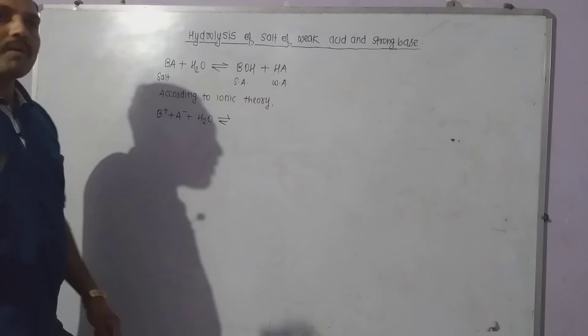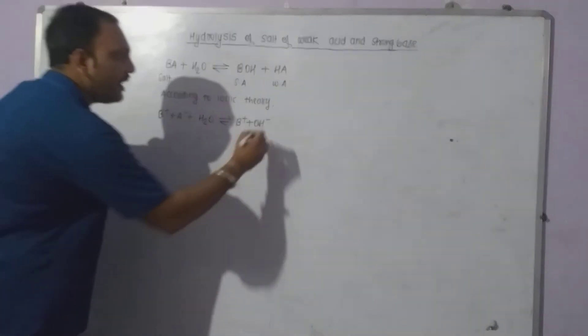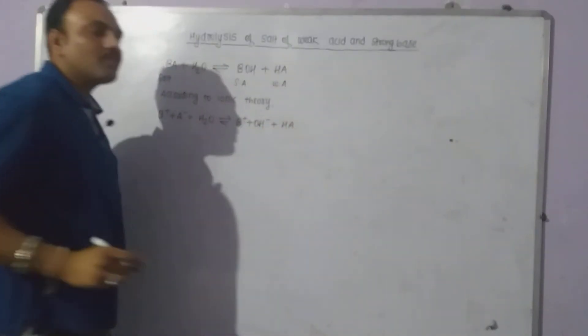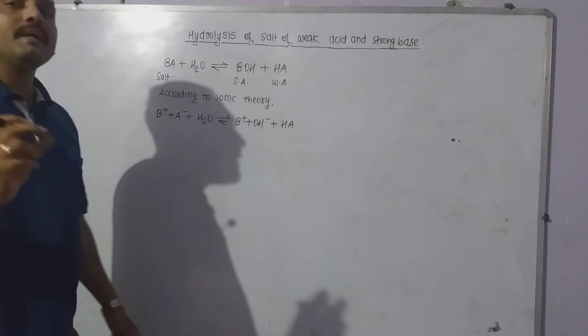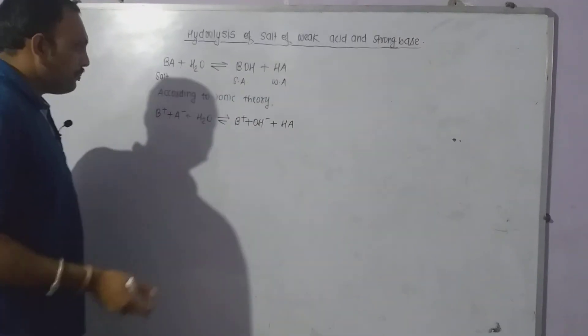Base is stronger so it dissociates completely producing B+ and OH-. Acid HA is weaker so it cannot be written into ions.